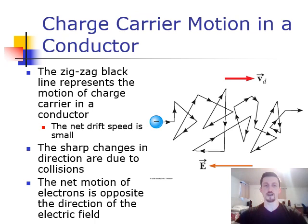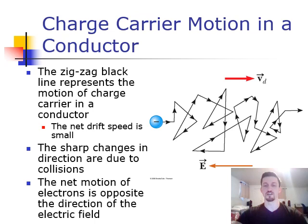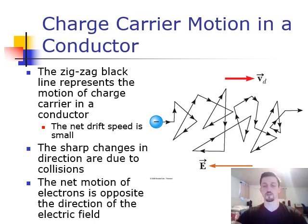On this slide, we can see what the actual motion of a charge carrier in a conductor would look like. You can see this zigzagging black line, which shows how an electron carrying charge would move in a wire. These really sharp changes in direction are because that electron is going to be colliding with all different things as it tries to move through this wire. So the actual result is that the net drift speed — sort of the net velocity of these electrons as they move along the wire — ends up being very slow. Normally we think of electrons as something that moves very fast, but because they're bouncing around in all different directions, they're kind of just slowly drifting along through the wire. The net motion of electrons is opposite the direction of the electric field, so the electric field and the current point one way, while the actual velocity of the electrons is in the opposite direction.